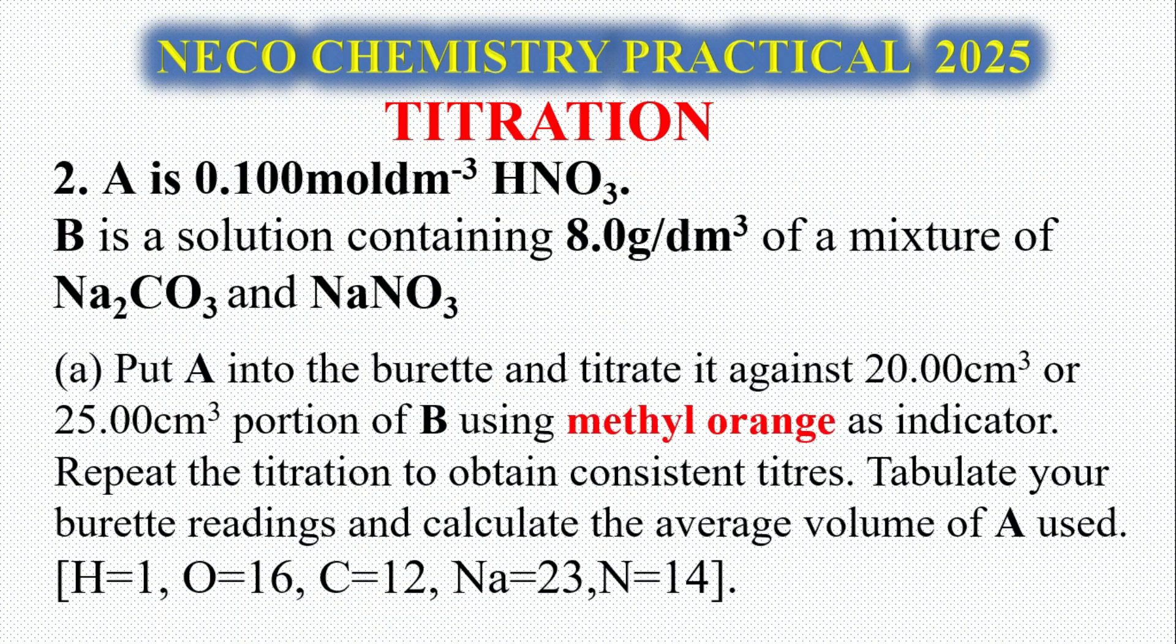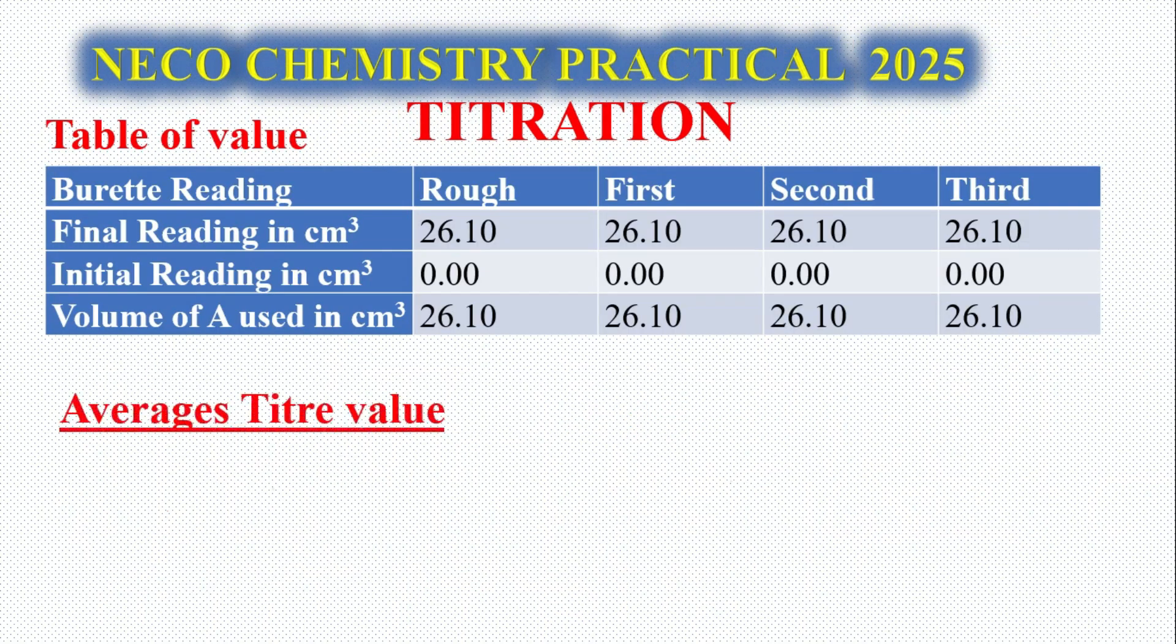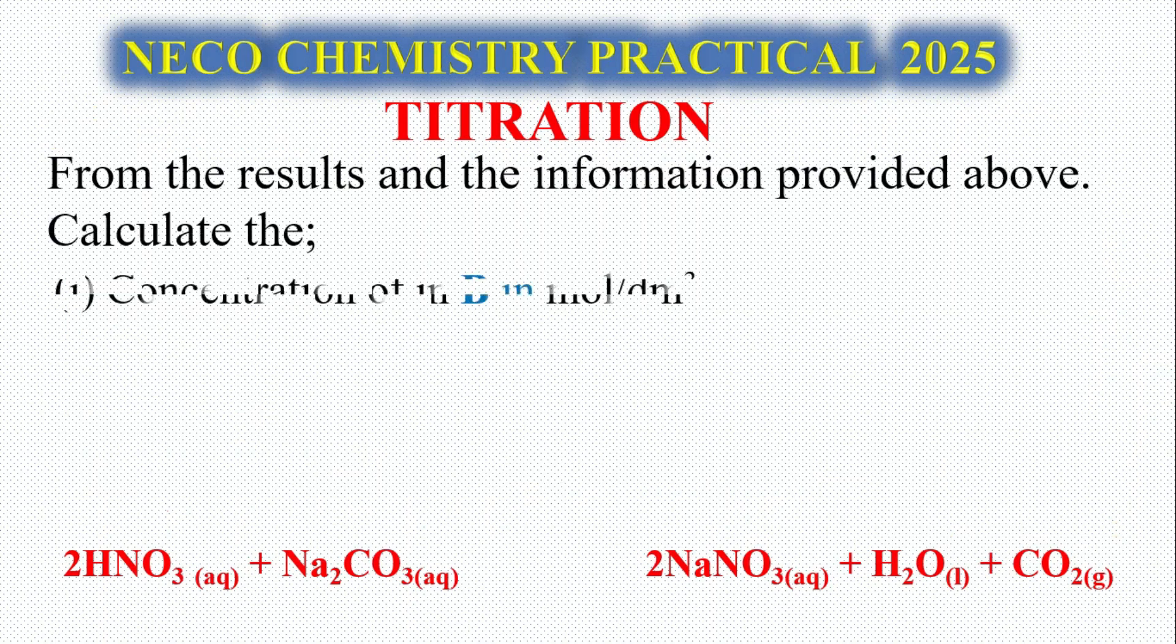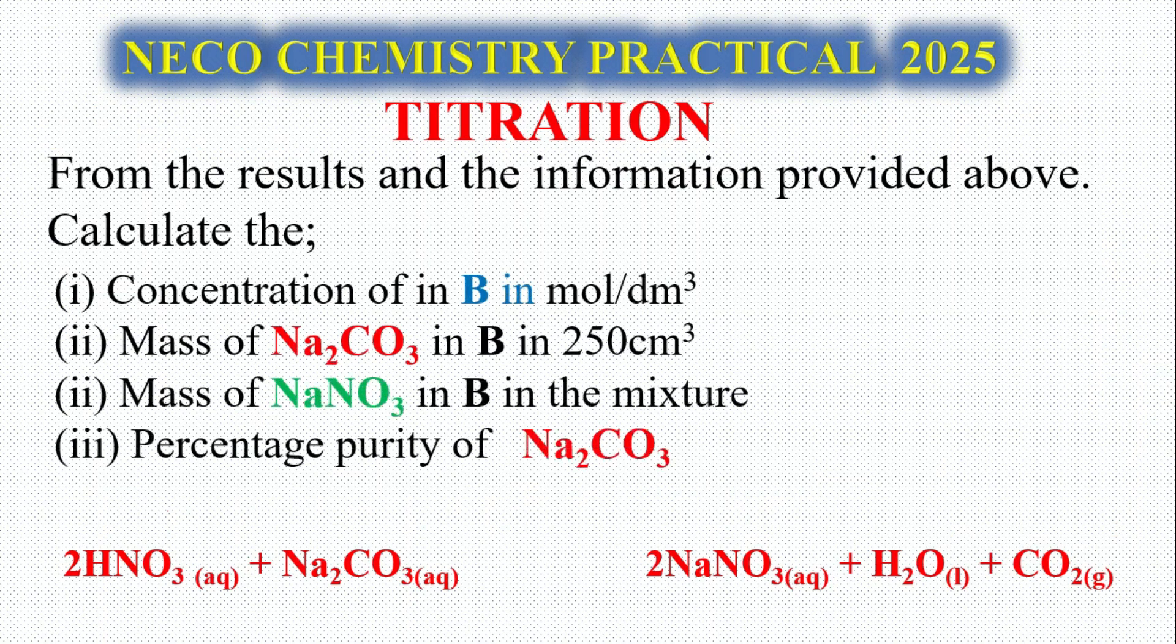Let's go to question number 2. Question number 2 says: A is 0.1 mol per dm³ of HNO3, B is containing 8.0 grams per dm³ of a mixture of Na2CO3 and NaNO3. You follow the same route, that is almost the same question. You have a table of values.